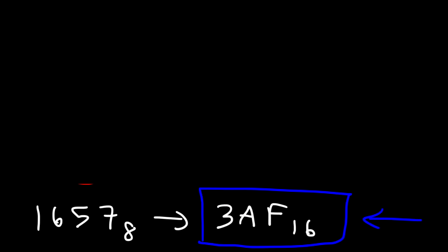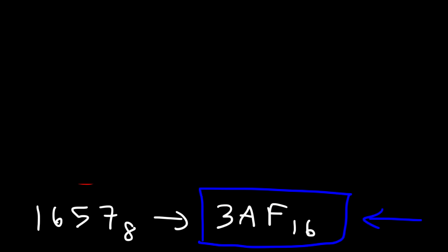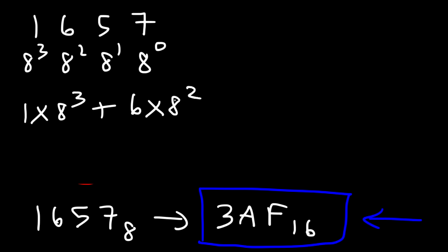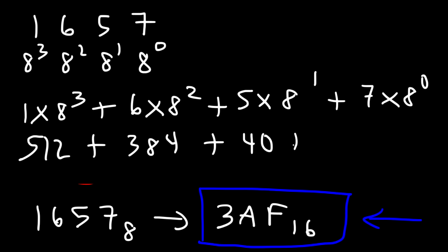Now to check the answer, let's convert both numbers into decimal and make sure we get the same result. To convert an octal number into decimal, we multiply each digit by 8 to the corresponding power. So it's 1 times 8 to the 3rd, plus 6 times 8 squared, plus 5 times 8 to the 1st, plus 7 times 8 to the 0. That gives us 512 plus 384 plus 40 plus 7, which equals 943 in the base 10 system.